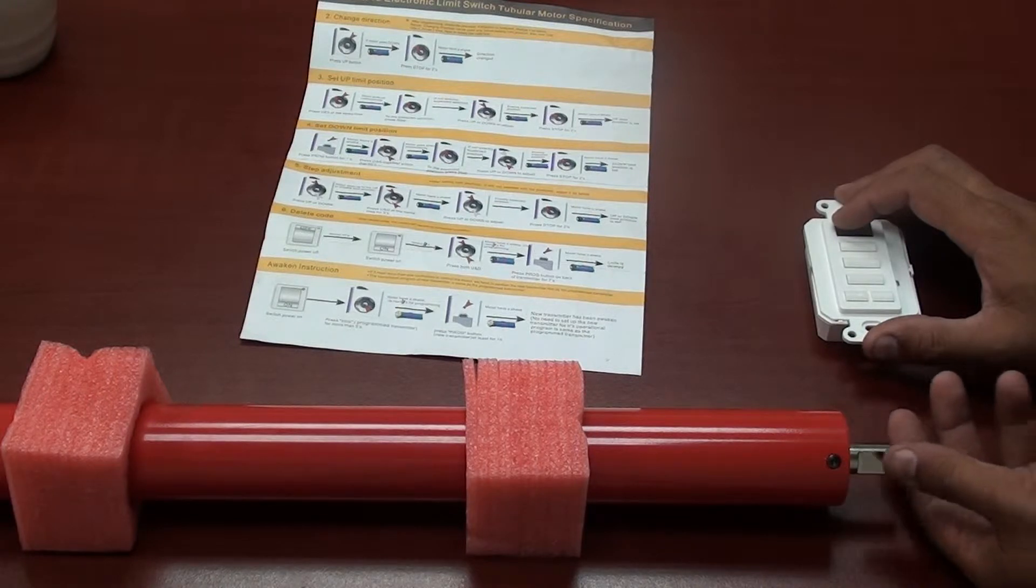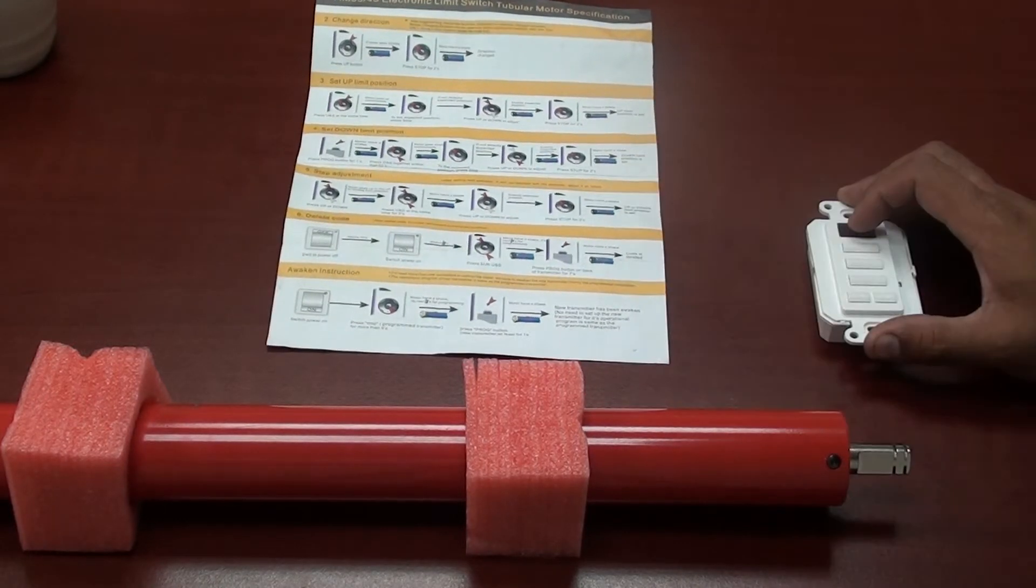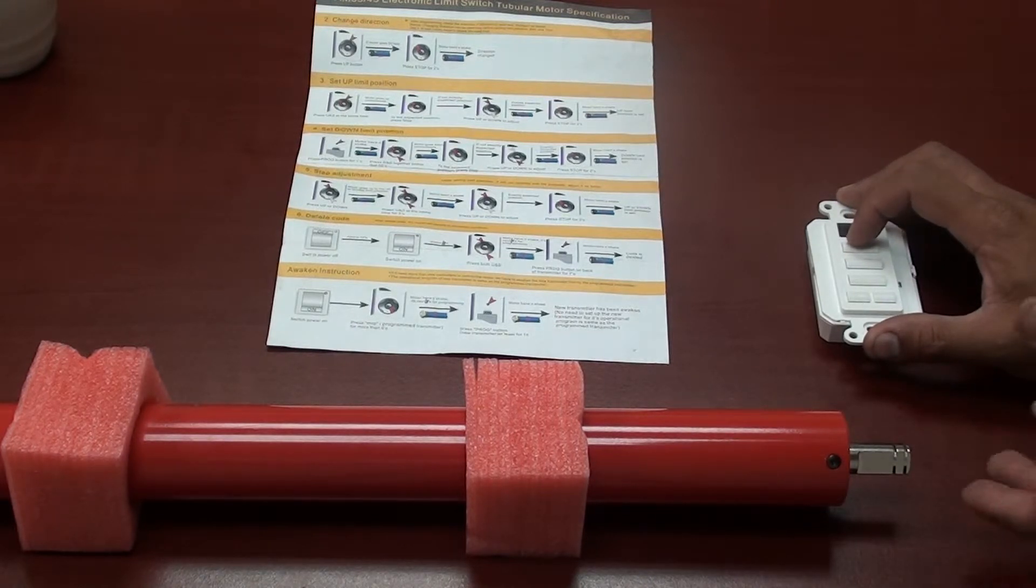Now if I wanted to readjust my limit, I would have to do step 5 from the instructions that the motor boxes provided. To do step 5, it says to hold the up and down button for five seconds, and then the motor will jog. Then I will tap the up button to readjust my up limit.